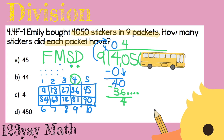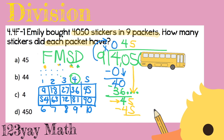Drop the next digit — it's a 5, so we get 45. Now Find a number equal to or less than 45. On our chart, 9 times 5 equals 45, which is exactly equal to 45. Multiply: 9 times 5 is 45. Subtract: 45 minus 45 is 0. Drop: bring down the next digit.